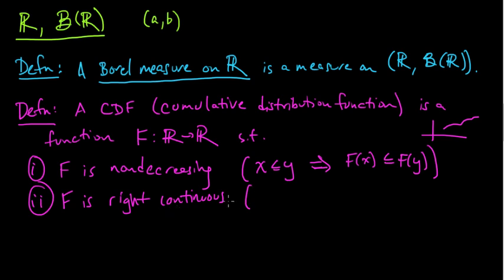Two, a CDF is right continuous. And what does that mean? That means that the limit as X approaches some number A from above, use this notation for the limit from above, F of X, so the limit of F of X as X approaches A from above, equals F of A.